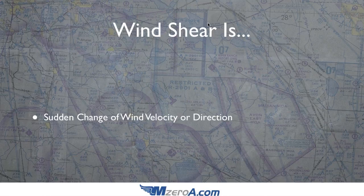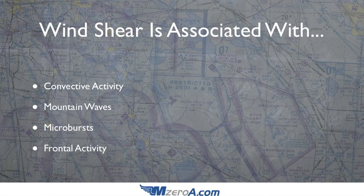So first off, what the heck is wind shear? Wind shear is the sudden change of wind velocity or direction. Wind shear is commonly associated with convective activity — when I say that, I'm talking about thunderstorms, things of that nature.